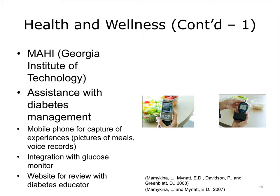MAHI, or Mobile Access to Health Information, is another application from the Georgia Institute of Technology developed in collaboration with Simons Corporation. MAHI is designed for individuals with diabetes and is meant to help them learn from their daily experiences. It is a distributed application that includes several components. A mobile phone with a custom application allows individuals to take pictures of all their meals and to record voice notes with their concerns and questions. A custom-built Bluetooth attachment to a conventional glucose meter helps them transfer all the readings from the meter onto their phone. These records combined are then sent to a remote server and posted on individuals' websites where they can view them and discuss them with a diabetes educator. In deployment studies, MAHI was shown to help individuals gain better appreciation of how their choices affect their health.